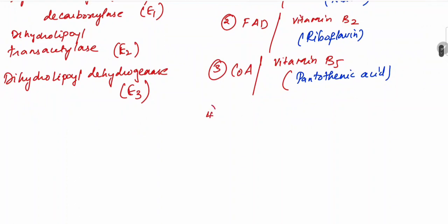Number four, you have the cofactor called lipoic acid, and number five you have thiamine pyrophosphate, which is vitamin B1.